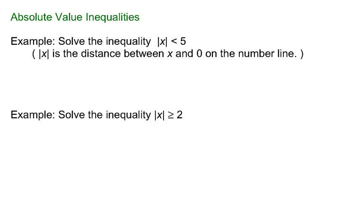Suppose we want to solve the inequality: the absolute value of x is less than 5. Let's remember that the absolute value of x represents the distance between x and 0 on the number line. So I want to think about what this inequality is really telling me in words. What we're looking for are numbers whose distance between themselves and 0 is less than 5, or the numbers that are less than 5 units from 0 on the number line. If we describe it in those words, this will be much easier to consider.